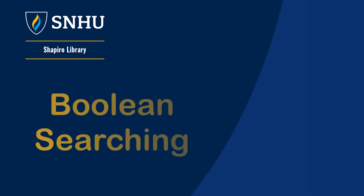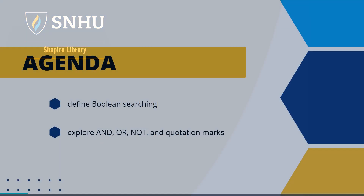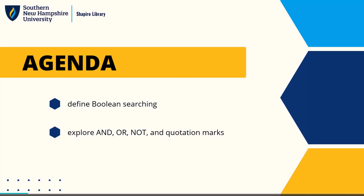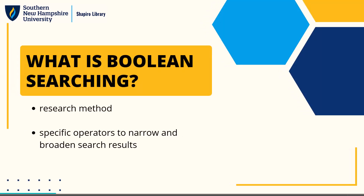Hello and welcome to this tutorial on boolean searching. This video will go over what boolean searching is and how to use the common boolean operators: AND, OR, NOT, and quotation marks in a sample search. Boolean searching is a method you can use in library databases or in search engines like Google to find more precise search results. There are specific operators in the form of words or punctuation that will narrow or broaden search results.